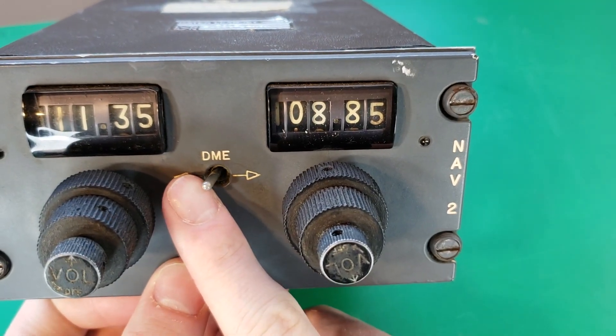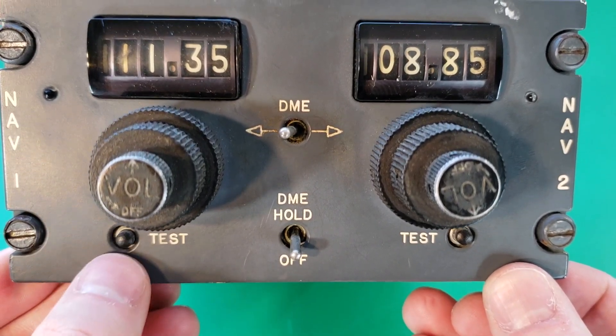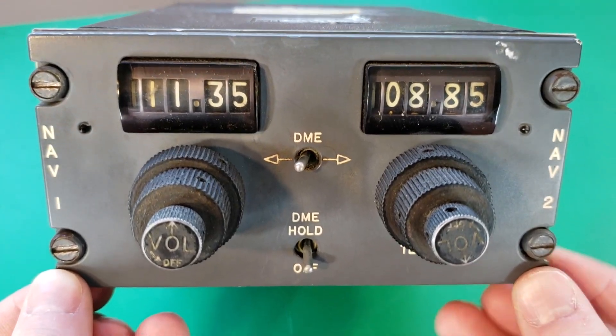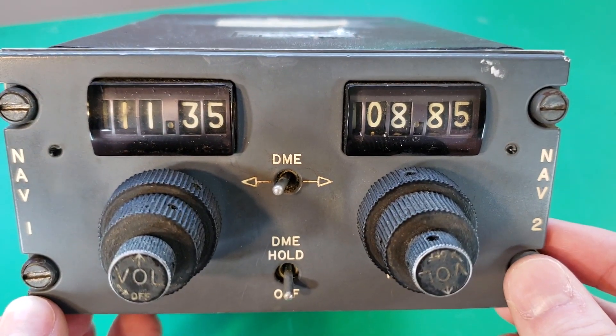We have a DME selector switch and a DME hold switch. We also have test buttons on the bottom. These four screws on the outside here are what's used to hold it into the cockpit instrument panel.